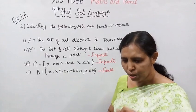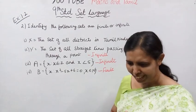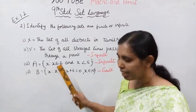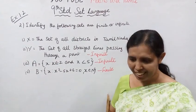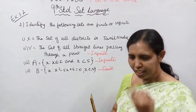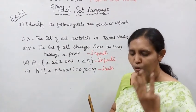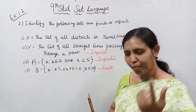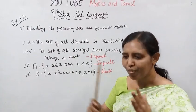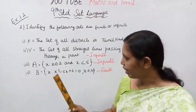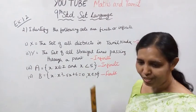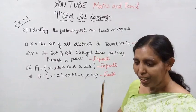For natural numbers less than 5: 1, 2, 3, 4. For integers, x∈Z with x<5: 4, 3, 2, 1, 0, -1, -2, -3... continuing infinitely. So this set is infinite.